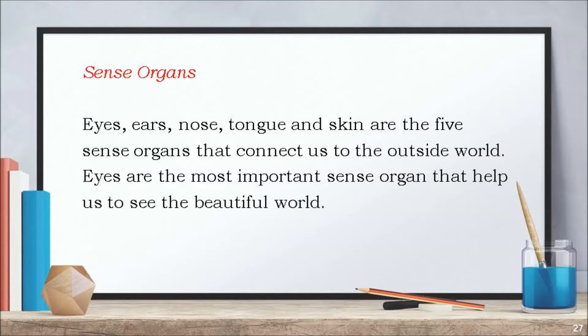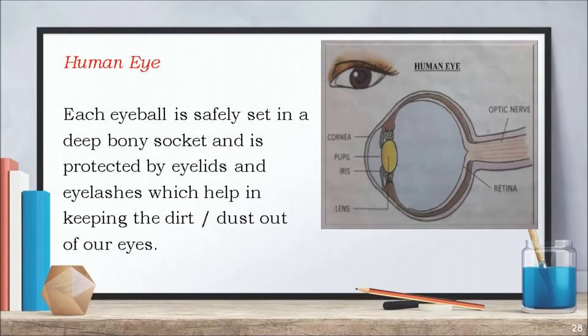Now getting into part 2 of the lesson — sense organs. Ears, eyes, nose, tongue, and skin are the five sense organs that connect us to the outside world. Eyes are the most important sense organs that help us to see the beautiful world around us.